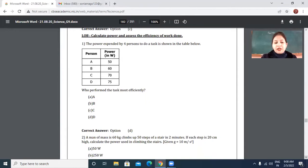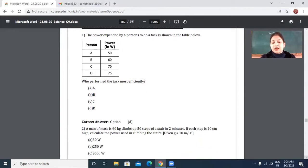Next, read this question. A man of mass 60 kg climbs up 50 steps of a stair in 2 minutes. If each step is 20 centimeter high, find the power used in climbing the stairs. Use small g equal to 10 meter per second square. Note down the data. I am also going to do it here. You also do it.